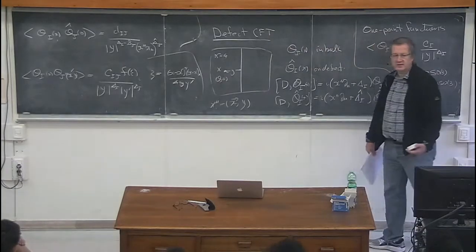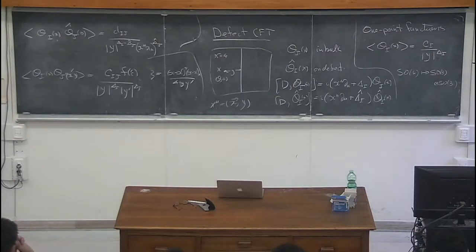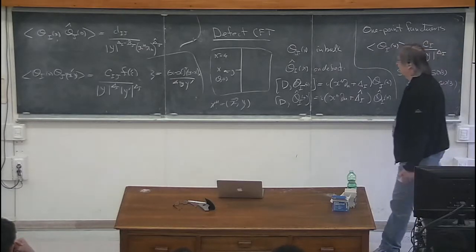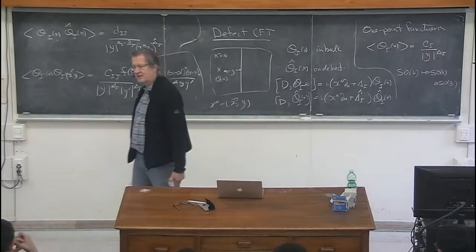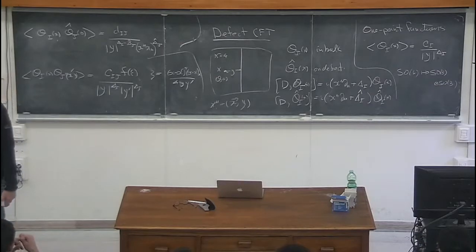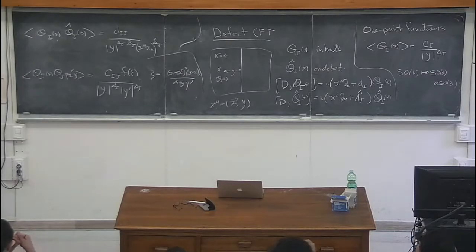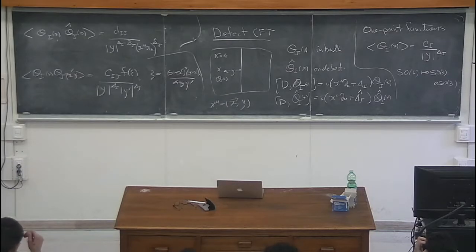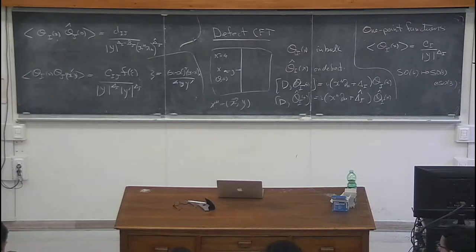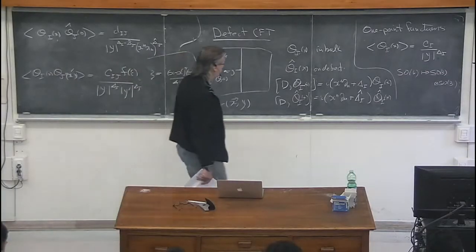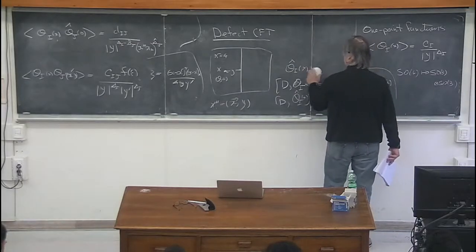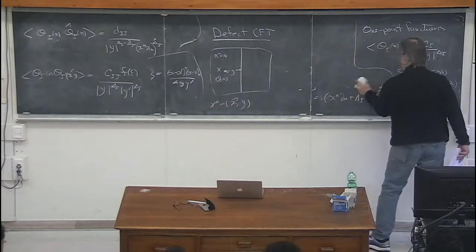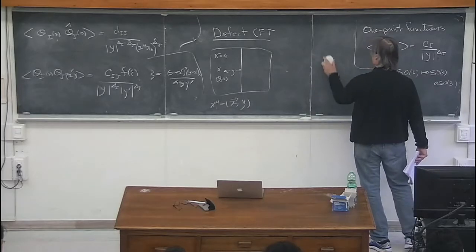Now let us move over to super Yang-Mills theory and talk about a few specific operators. The operators of great interest — the ones that have been the laboratory for the very first checks of AdS/CFT duality — are the so-called chiral primary operators. In N=4, these operators have protected conformal dimensions, so that in the strong coupling limit their conformal dimensions stay small. They are dual to modes of the super graviton on the AdS side of the duality, and the simplest ones are just made out of scalar fields.